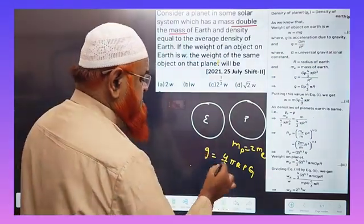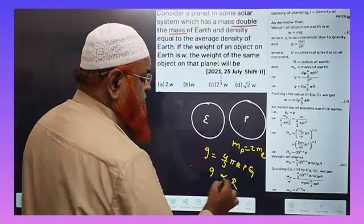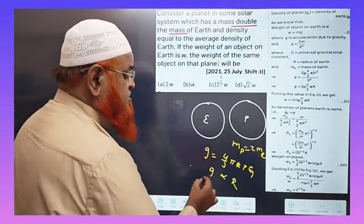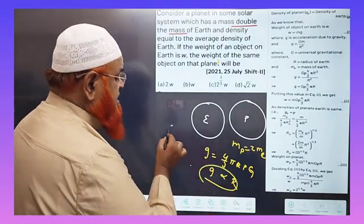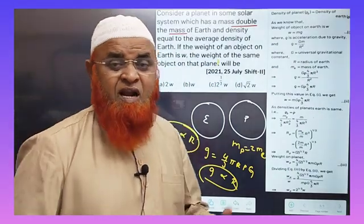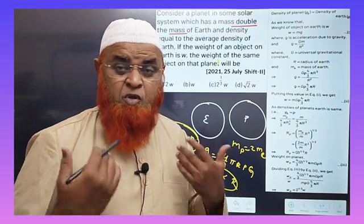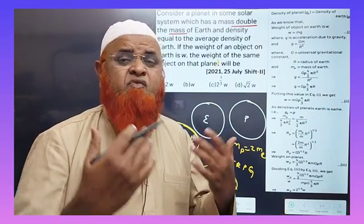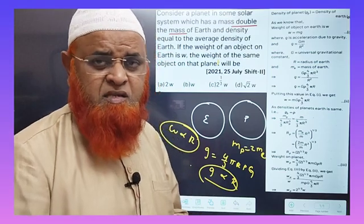With this, it is understood that g is directly proportional to R. When g is directly proportional to R, it is understood that weight is also directly proportional to R. When gravity is directly proportional to radius, because weight equals mg, weight is also directly proportional to radius.